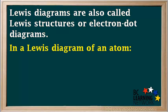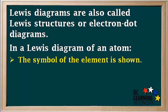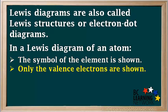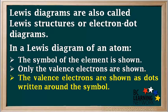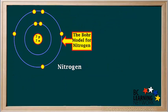In a Lewis diagram of an atom, the symbol of the element is shown, and only the valence electrons are shown. This is different from a Bohr diagram where all of the electrons are shown. The valence electrons are shown as dots written around the symbol.